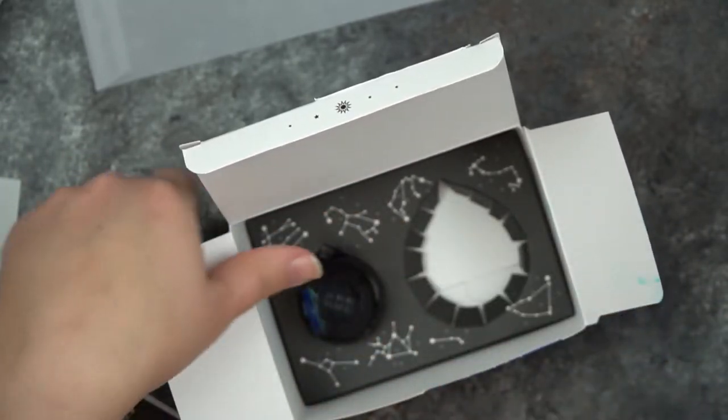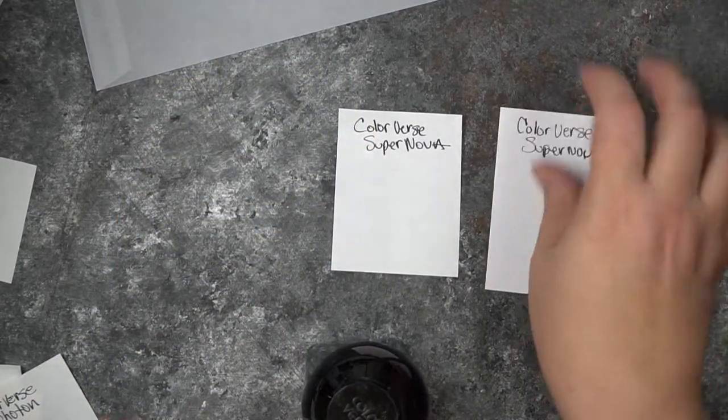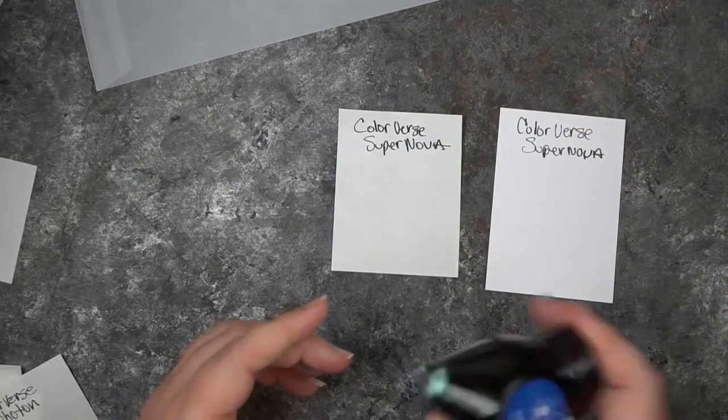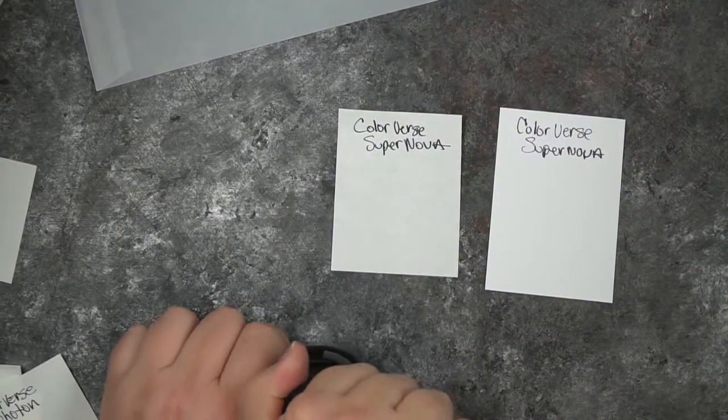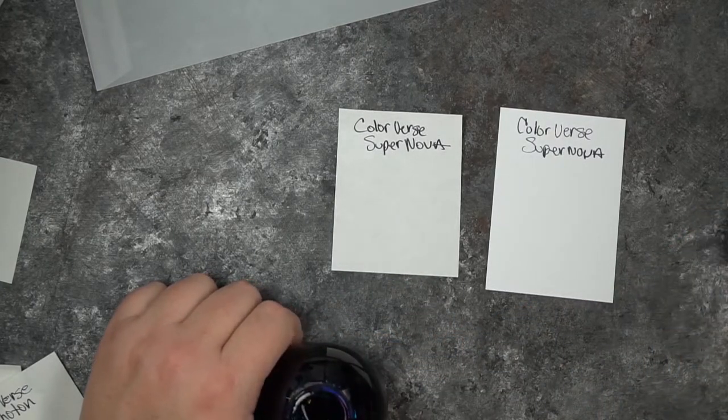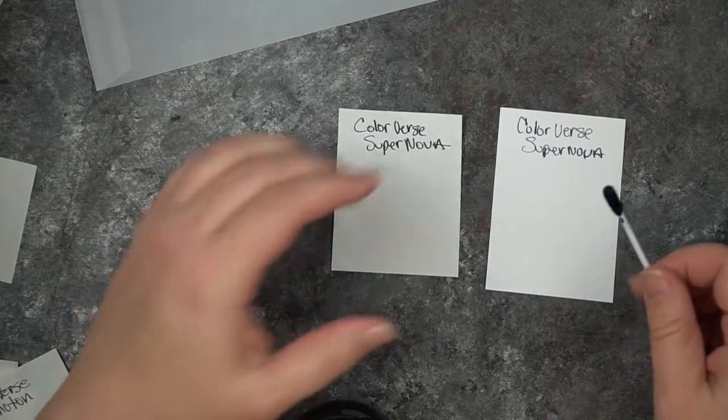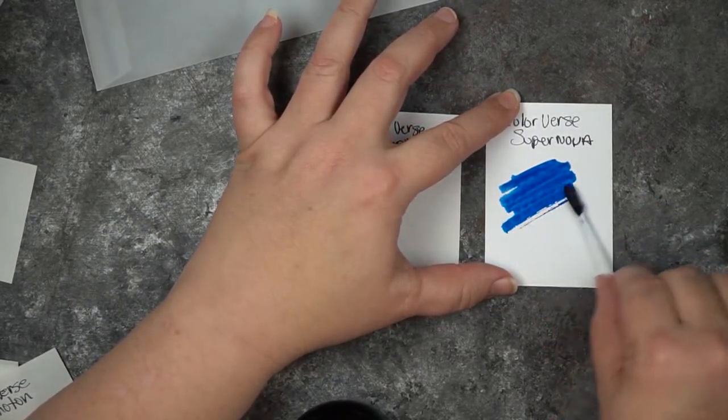I got ink all over the place. These boxes I may actually keep because they're just so cute. Supernova and Supernova. This one sheens a bit. I used it in my Pelikan. It's a very wet ink. I will say that. Extremely wet ink.